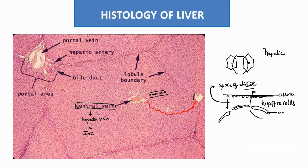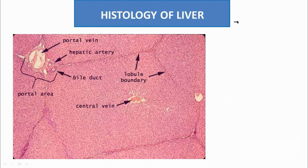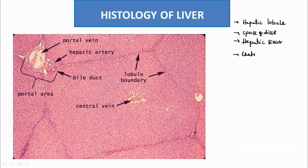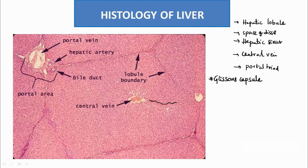All these drain into the portal circulation in the portal area. The liver is covered by Glisson's capsule, which is a thick connective tissue covering the whole liver. This capsule permeates into the substance of the liver but never separates the liver cells — there is no connective tissue between the sinusoids. Glisson's capsule only surrounds the portal tract.